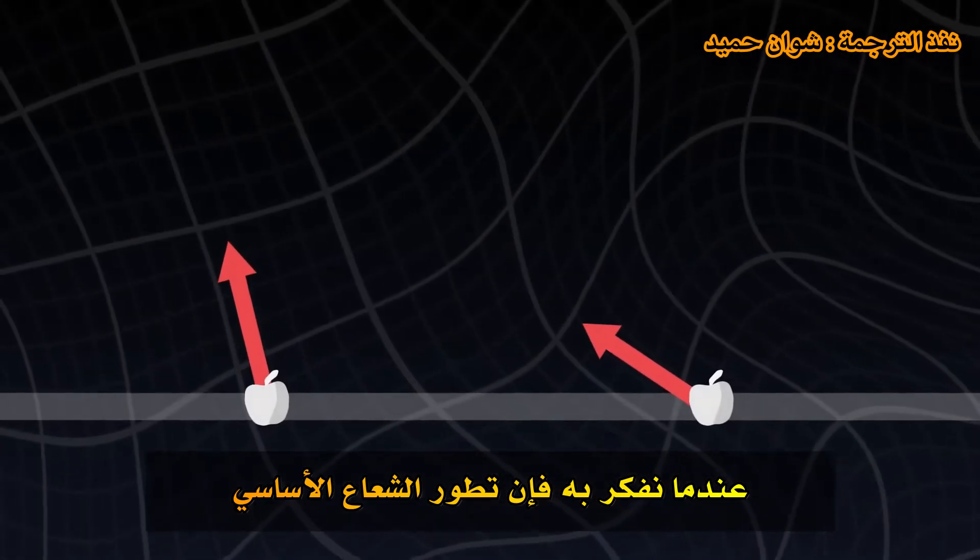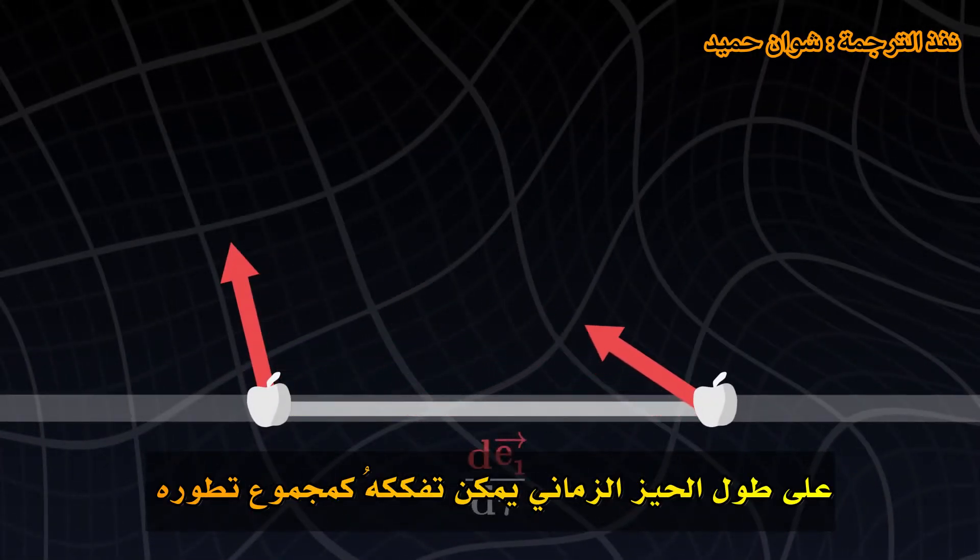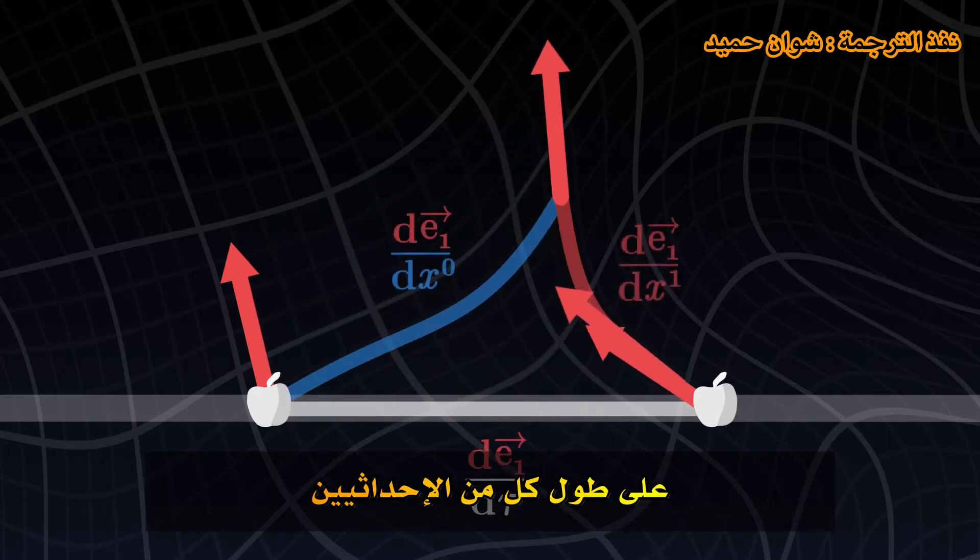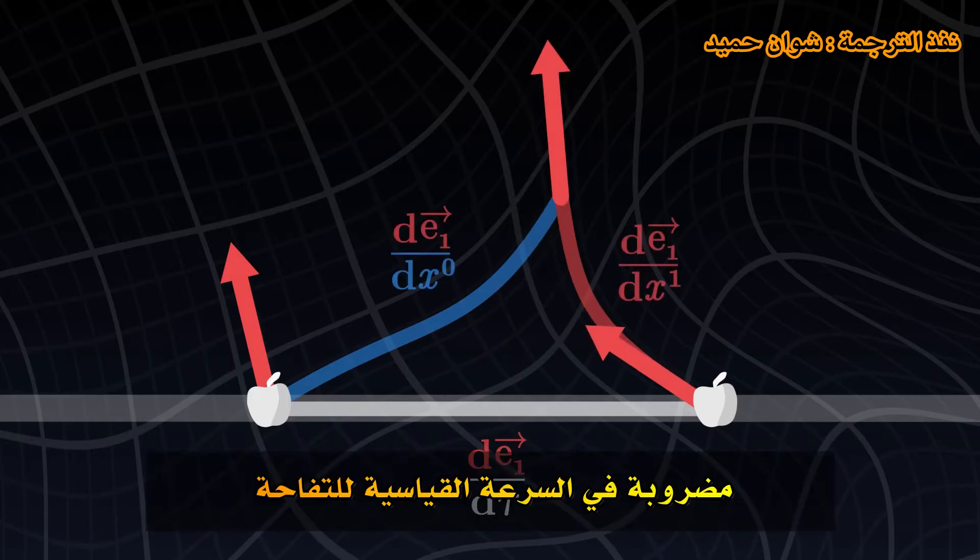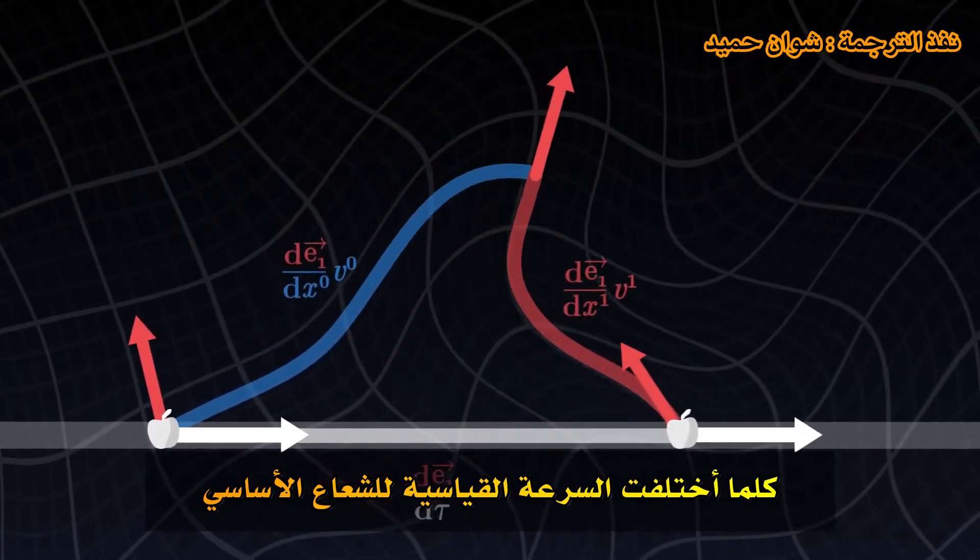When we think about it, the evolution of a basis vector along the worldline can be decomposed as the sum of its evolution along each of the two coordinates, multiplied by the speed of the apple, because the faster the apple moves, the faster the basis vector will vary.